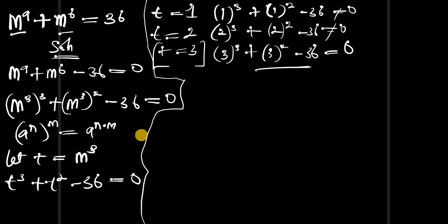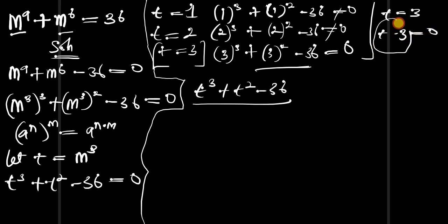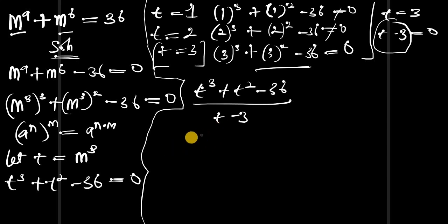We need to find the other solutions, so we can divide t power 3 plus t power 2 minus 36 by this factor. If t equals 3, then t minus 3 equals zero — this becomes a factor. So we divide by t minus 3 to get the other factors. Let's make use of the synthetic division method.